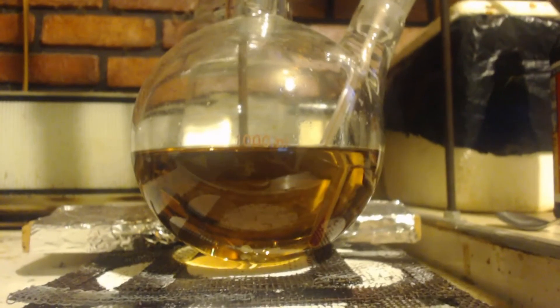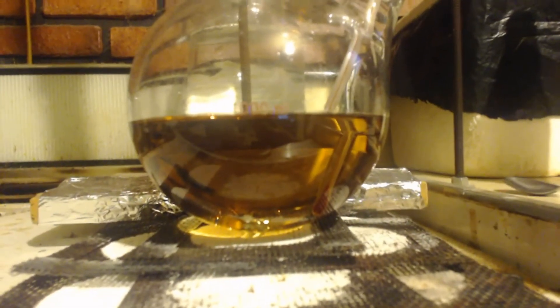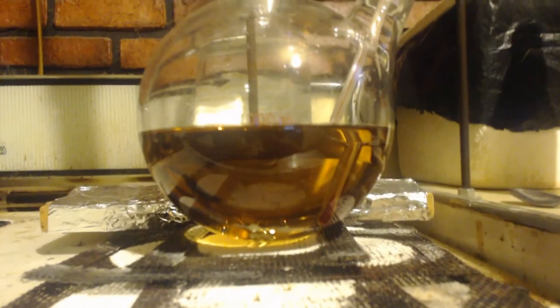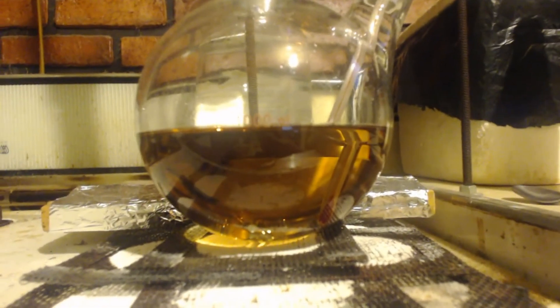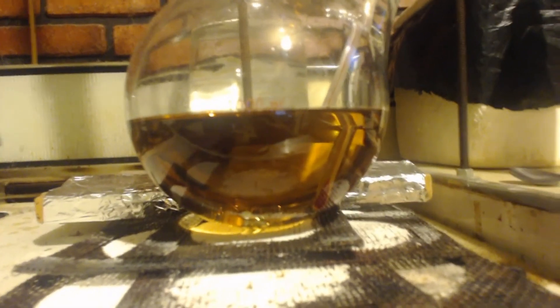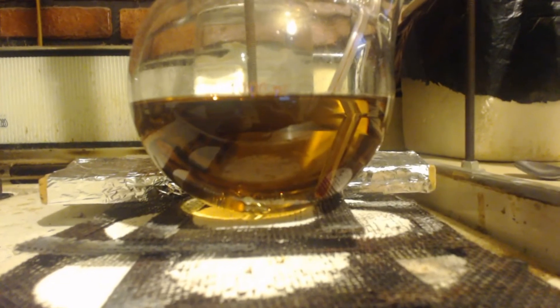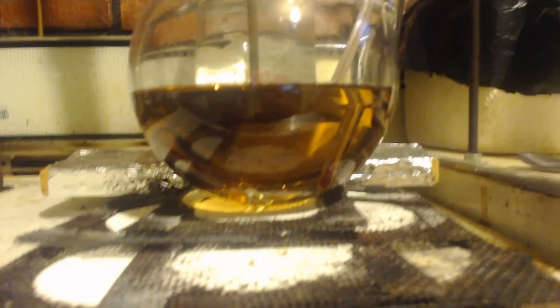So here's our ethyl bisulfate. And it, during the refluxing, it turned from clear to yellow, kind of like urine, to this orange color, this orange-brown color. And now we need to make it into sodium ethyl sulfate.